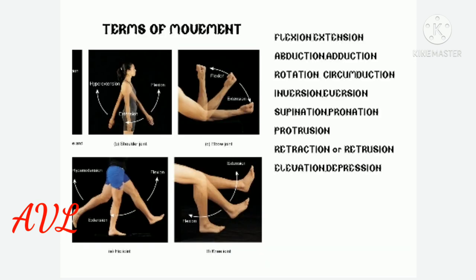Anatomical terms of movement include: flexion and extension, abduction and adduction, rotation and circumduction, inversion and eversion, supination and pronation, protraction and retraction, and elevation and depression.